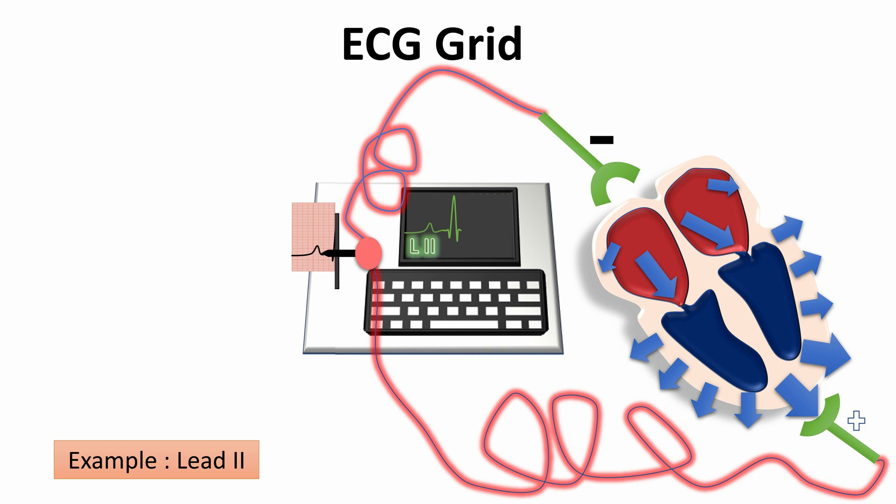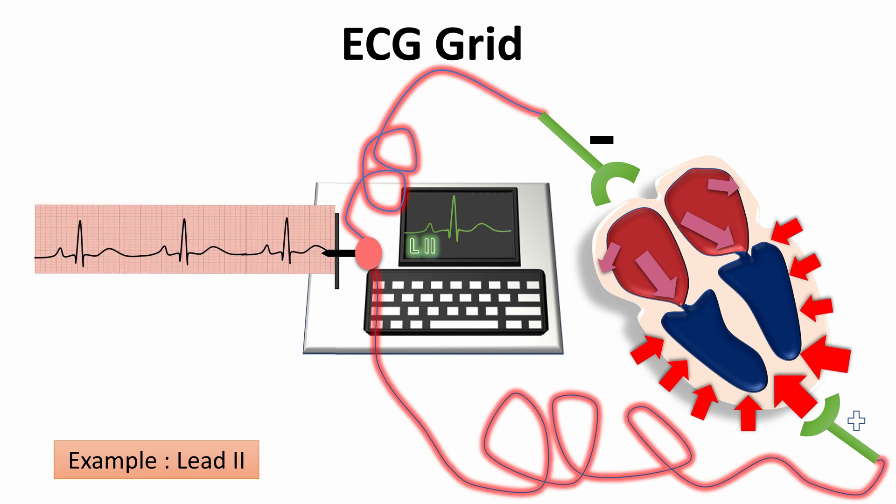Then, we will have the repolarization of both atrium, and as it is weak and has no net vector, it will not be drawn on ECG paper. After that, we will have the repolarization of both ventricles with opposite direction and opposite charges away from the recording electrode, so also it will draw a positive T-wave. And this story will be repeated on the next cycle.